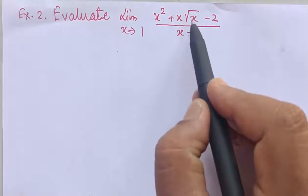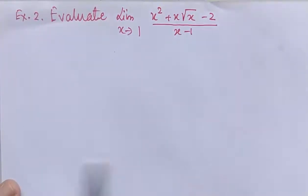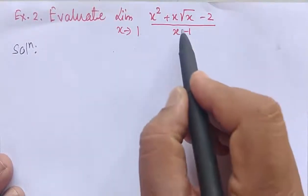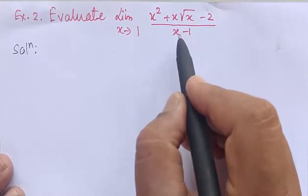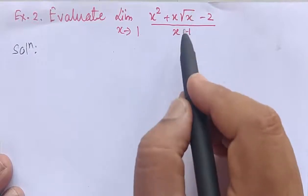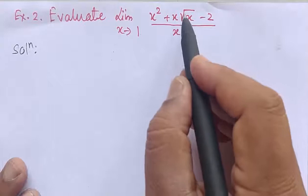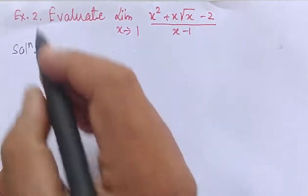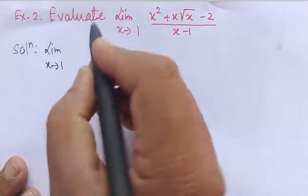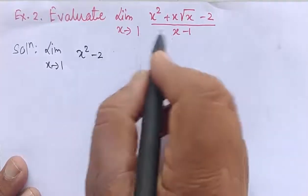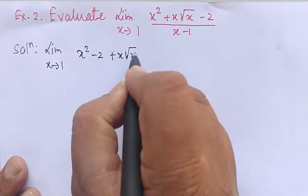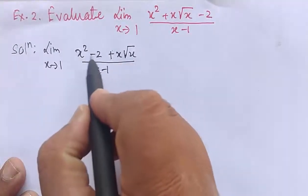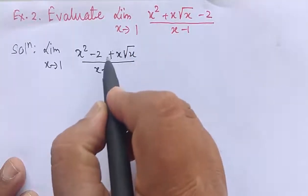Example number 2: evaluate limit as x tends to 1 of (x squared plus x times square root of x minus 2) divided by (x minus 1). If we put x equal to 1 in the denominator, we get 1 minus 1, which is 0. Therefore x minus 1 is a factor in both numerator and denominator. Since there is a square root of x, the numerator is irrational.